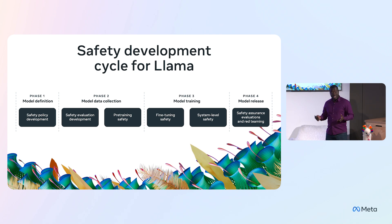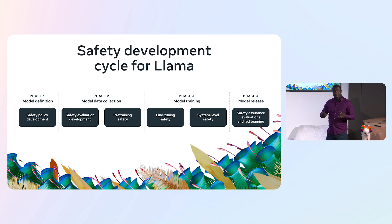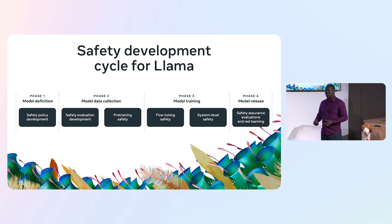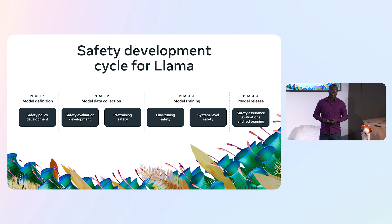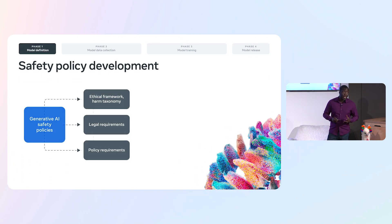Once all of this is done, if we've done our job correctly, we then take the model that we've built and put it through a very rigorous safety evaluation process — both scaled evaluations and red teaming — to ensure that the model we generated abides by the safety policies we intended. Let's double click on this.